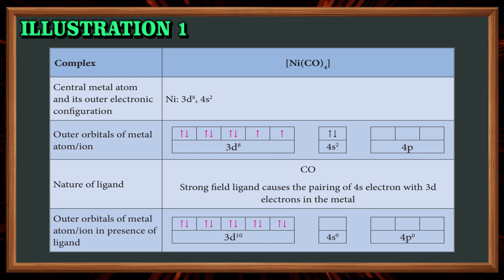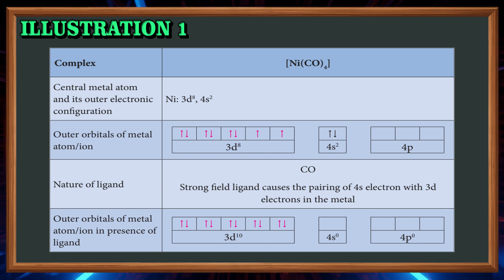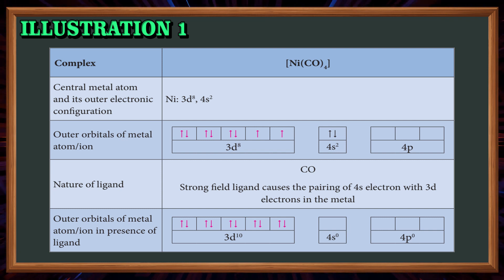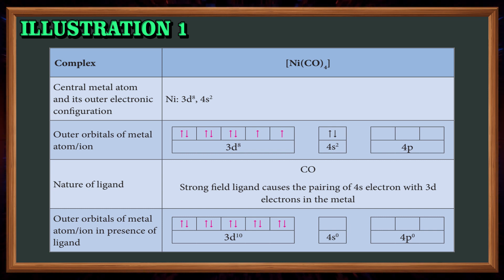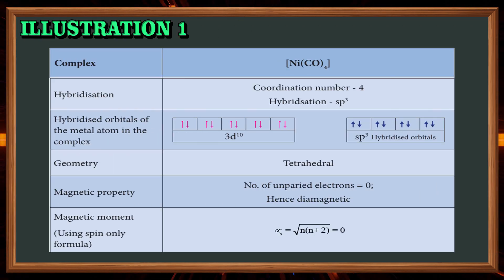The nature of the ligand carbonyl is a strong-field ligand, which causes the pairing of the 4s electrons with the 3d electrons in the metal. The two electrons in the 4s orbital shift to the d orbital so that 3d becomes 3d10, leaving 4s and 4p empty.